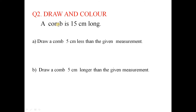Draw and color: a comb is 15 centimeter long. Draw a comb 5 centimeter less than the given measurement. So 15 minus 5 equals 10 centimeter — draw a 10 centimeter comb. Next, draw a comb 5 centimeter longer than the given measurement: 15 plus 5 equals 20 centimeter. Draw a 20 centimeter comb.